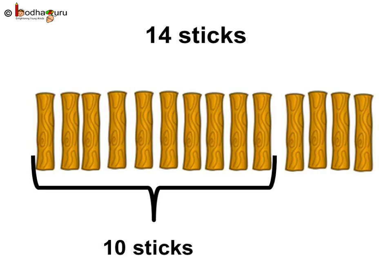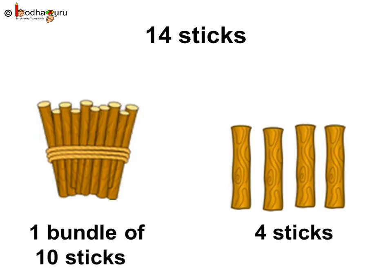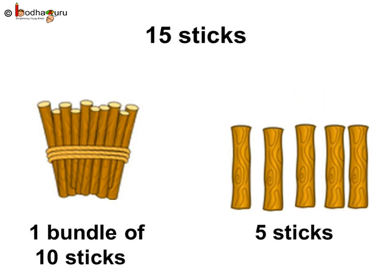Same way, if Bola collected 14 sticks, then 10 sticks, 11, 12, 13, 14 sticks. So, a bundle of 10 and 4 sticks are left. Thus, 14 sticks means a bundle of 10 sticks and 4 sticks.